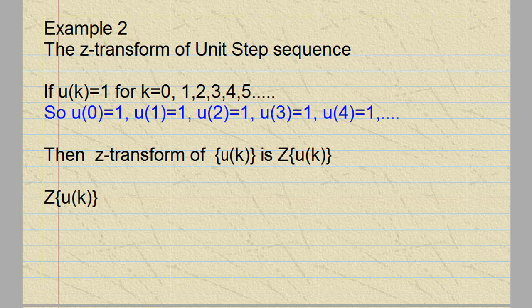Let's look at the second example. I'm going to find the Z-transform of the unit step sequence. If u(k) = 1 for k equals 0, 1, 2, 3, 4, 5, and so on.